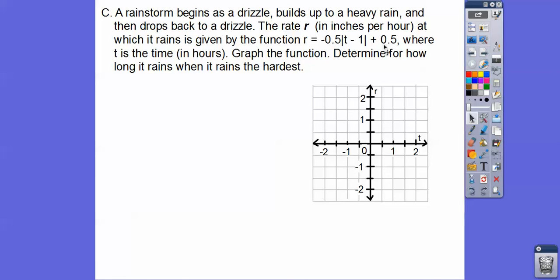So we're going to go ahead and graph this vertex right here at 1, 1/2 right here, where t is in hours and r is in inches per hour right there. So graph the function, and then we'll determine how long it rains and when it rains the hardest. So let's first graph, think of this as y equals negative 1/2 x minus 1 plus 0.5, the absolute value of that. So the vertex is at 1, 1/2, so over 1, up 1/2. This is a half right here, so there's the vertex right there.